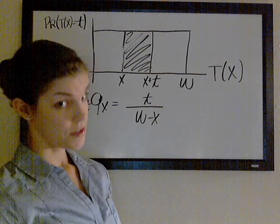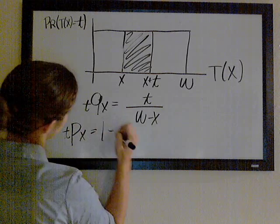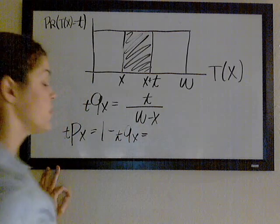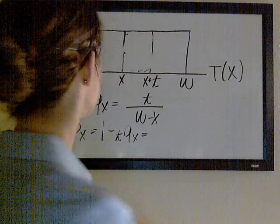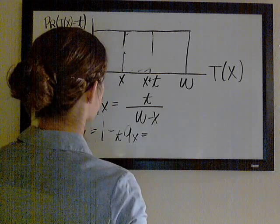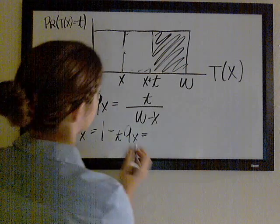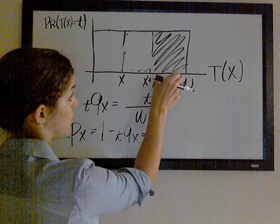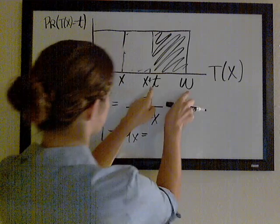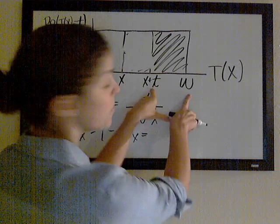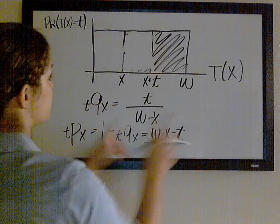Maybe we want to know the probability that you do survive t years — this is tpx. We know that's 1 minus tqx, so you could just take 1 minus that. You should also be able to reason it out from the graph: if you do survive t years, your future lifetime is somewhere in the upper interval. So it's omega minus quantity x plus t, which is omega minus x minus t, all over the interval in which you started, which is omega minus x.